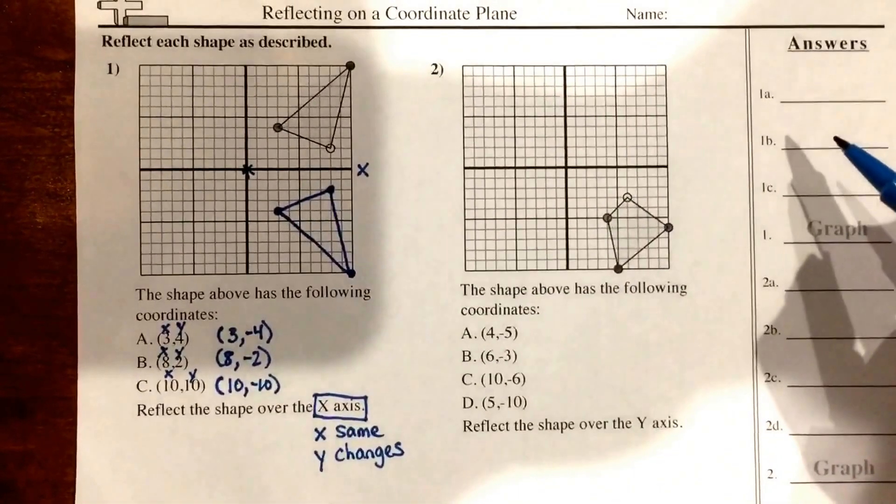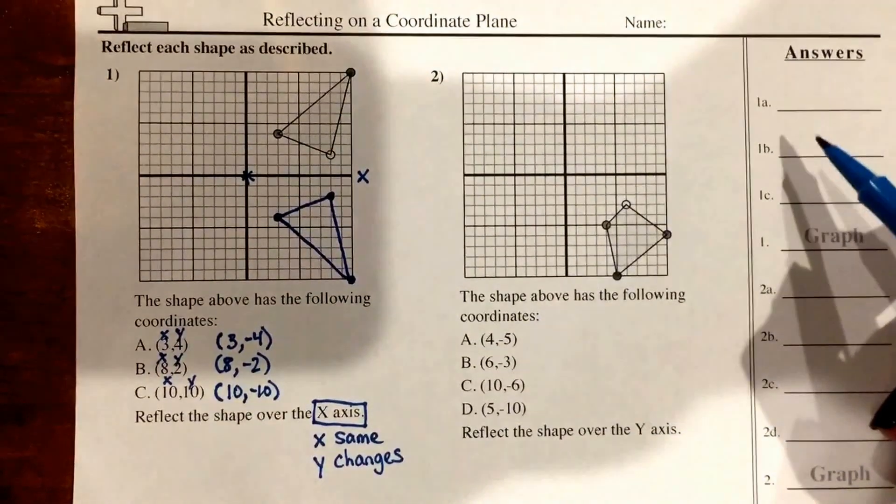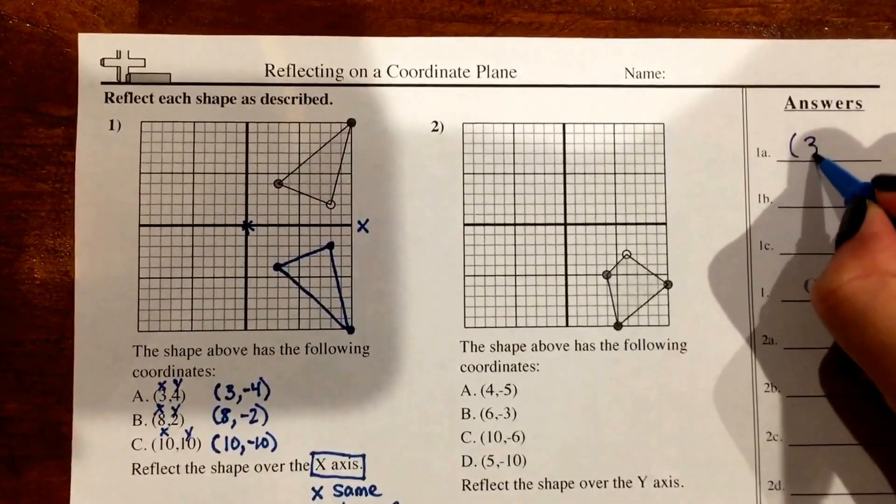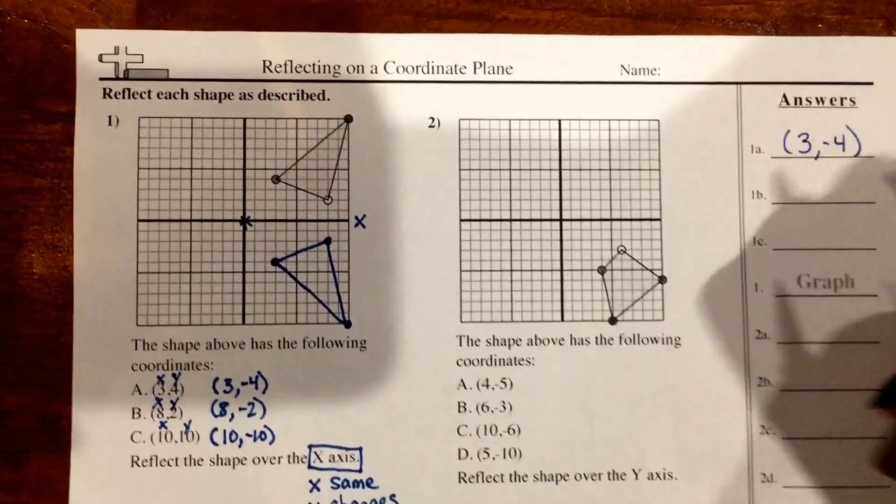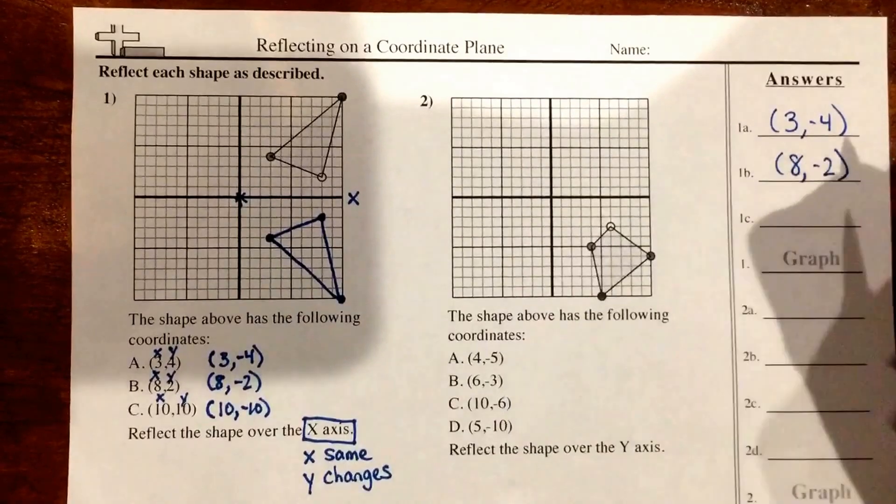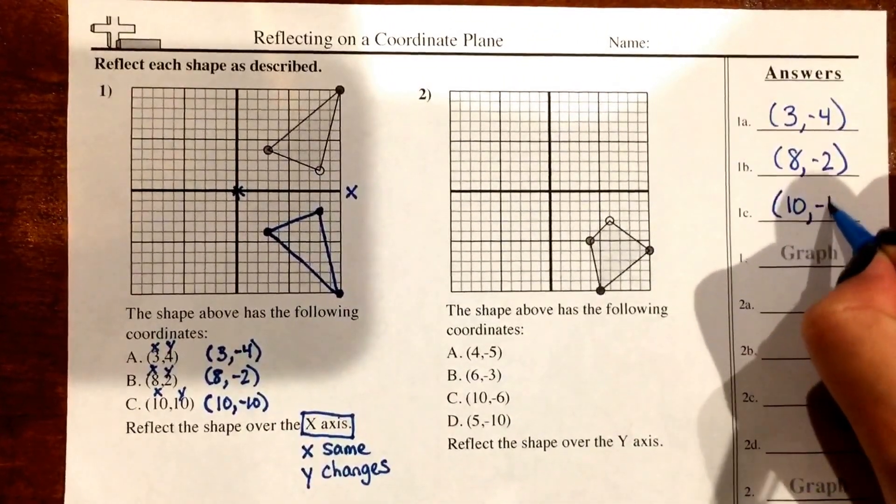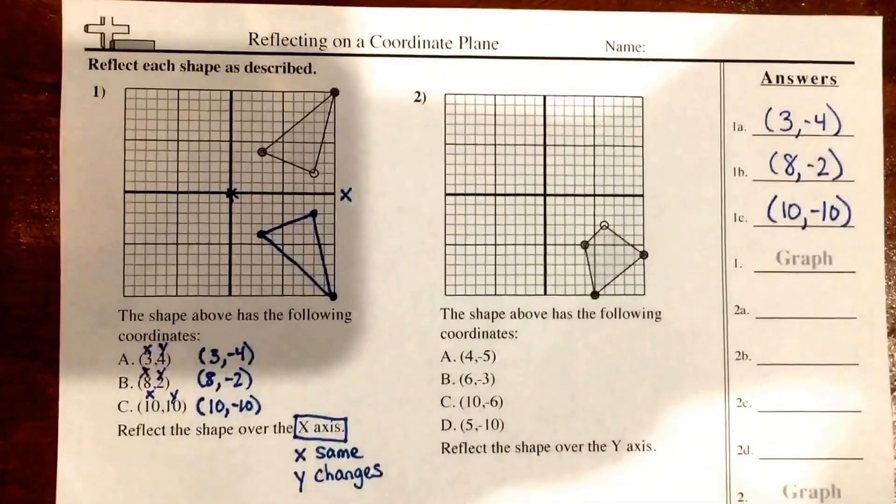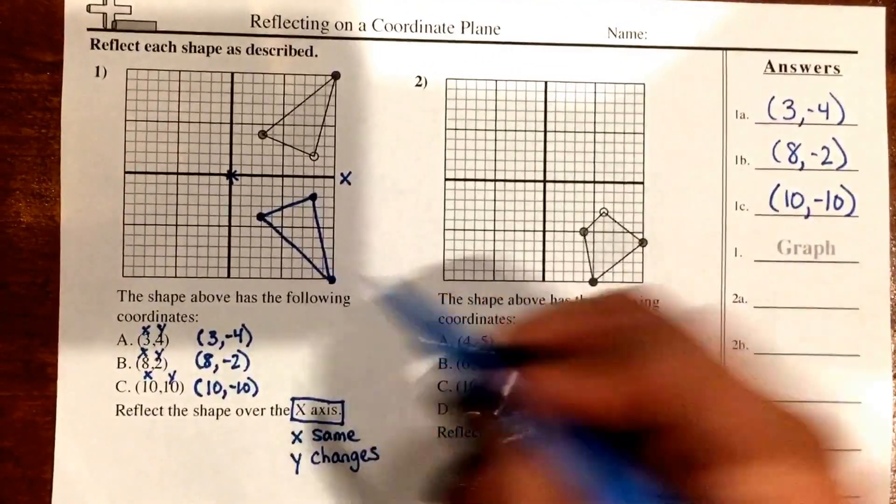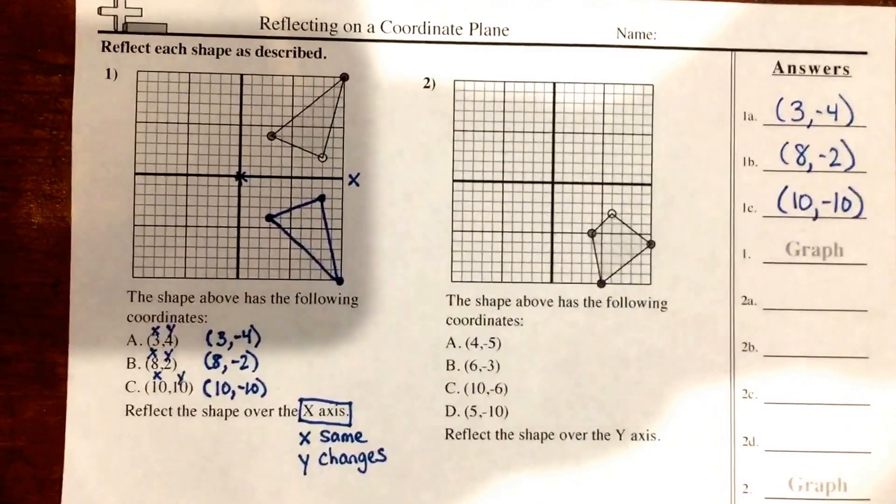So over here under my answers, I'm going to write my three points. So point A was (3, -4). Point B was (8, -2). And point C was (10, -10), after it was reflected. And then next to number 1, it just says graph, which I already did in my coordinate grid.